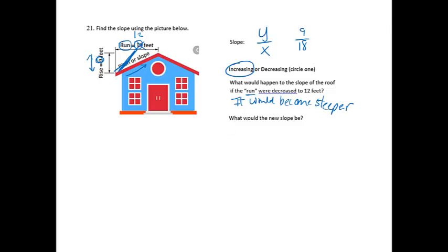And then the last question is, what would the new slope be? Well, instead of having 9 over 18, I'm now going to have 9 over my new number, which is going to be 9 over 12. And there we go.